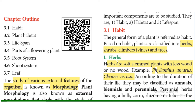First, herbs. Herbs are soft-stemmed plants with less wood. The stem is soft with little or no woody nature. Examples include Phyllanthus amarus and Cleome viscosa. Herbs are soft-stemmed plants.